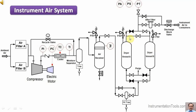After passing through dryer vessels A and B, the air passes through the after filter and then goes to the instrument air consumer.